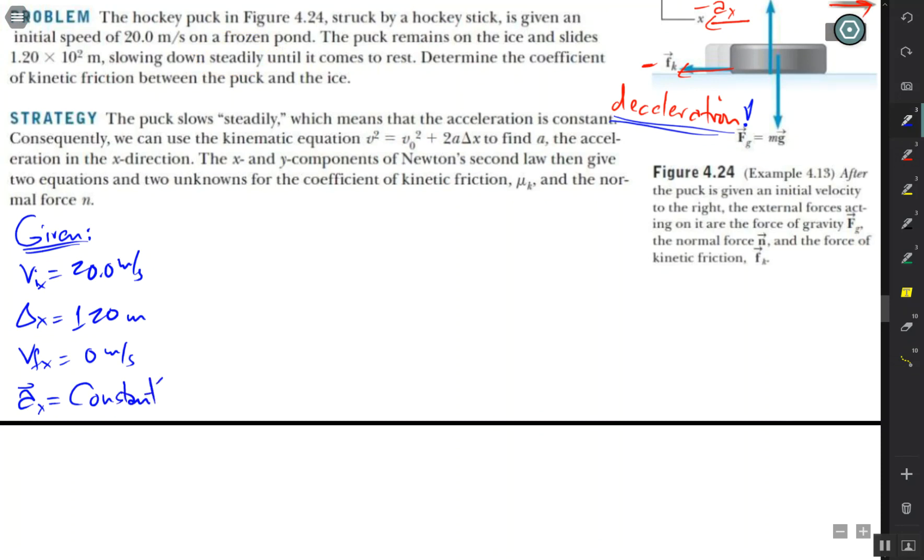This is also important because it allows us to use some of the kinematic equations, just one. And we're just looking for one thing. We're looking for μ_k between this puck and the surface of the ice.